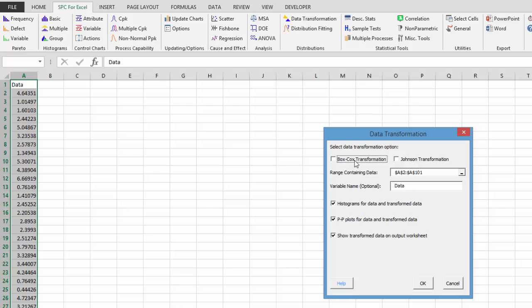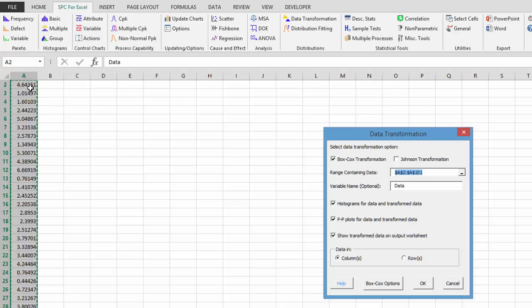We're going to run the Box-Cox transformation, so we'll select that. This is the range containing the data. It's found automatically based on the selection you have in the worksheet.